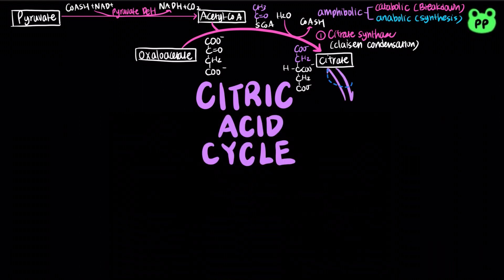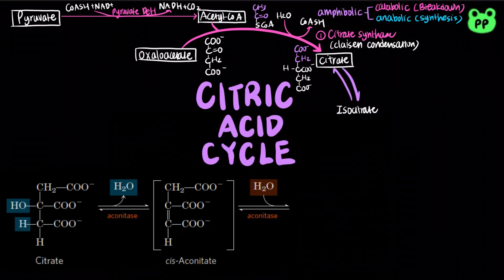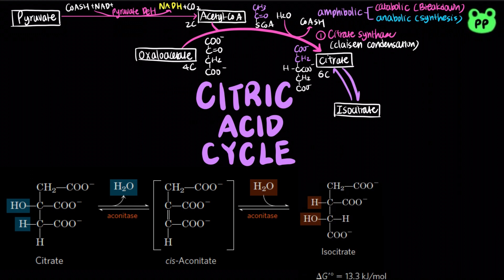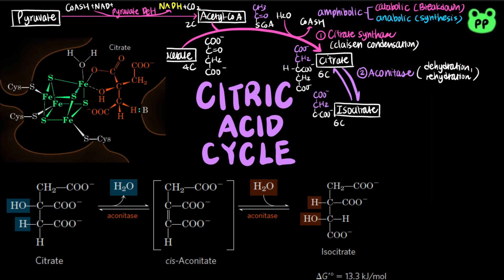In the second step of the citric acid cycle, citrate undergoes dehydration to form cis-aconitate, which undergoes hydration to form isocitrate. This reversible transformation of citrate to isocitrate is carried out by the enzyme aconitase, which contains an iron-sulfur center that participates both in the binding of the substrate at the active site and in the catalytic addition or removal of water.